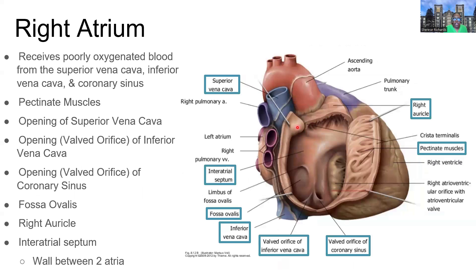Let's look more closely at each chamber, starting with the right atrium. The right atrium receives poorly oxygenated blood coming back from the superior vena cava — which brings blood from the upper extremities, head, neck, and brain — and from the inferior vena cava, which returns venous blood from everything below the diaphragm. Both of those come back to the right atrium. The coronary sinus is one of the coronary veins that drains the heart muscle itself, also returning via a small opening into the right atrium.